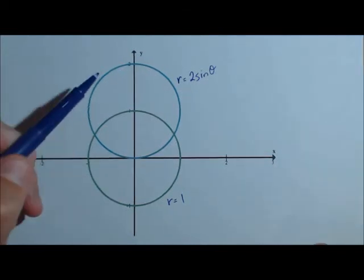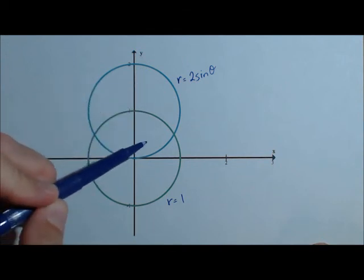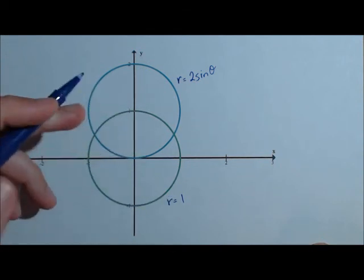In this video, our goal is to find the area inside r equals 2 sine theta, so inside this circle here, and outside r equals 1, so outside this circle here.